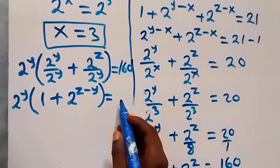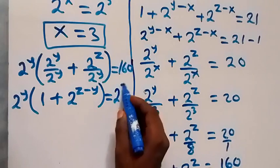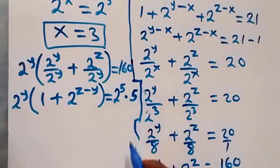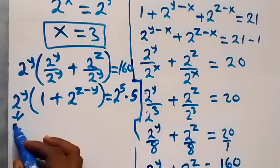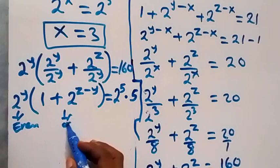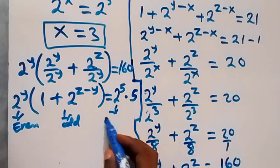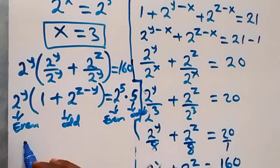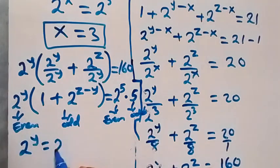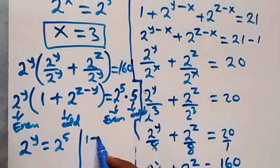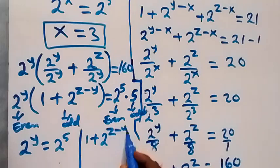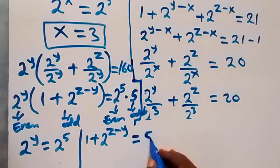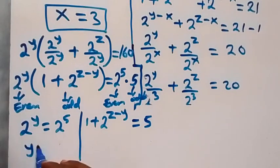We separate 160 as 2 raised to power 5 times 5, which is 32 times 5. The even part is 2 raised to power y and the odd part is the bracket. Equating, 2 raised to power y equals 2 raised to power 5, giving y equals 5. Also, 1 plus 2 raised to power (z minus y) equals 5.